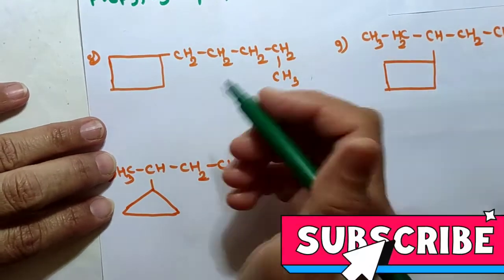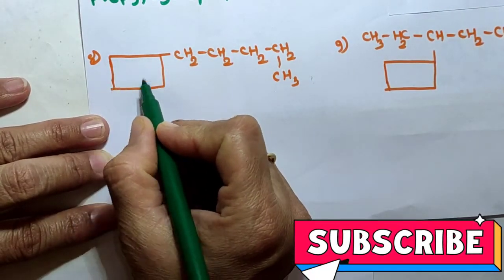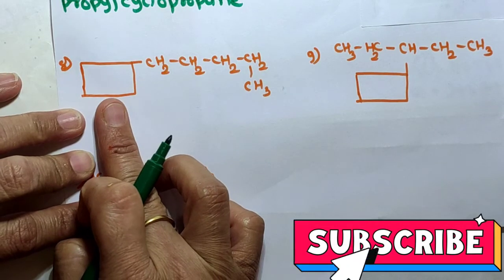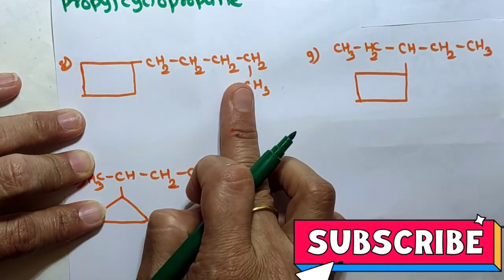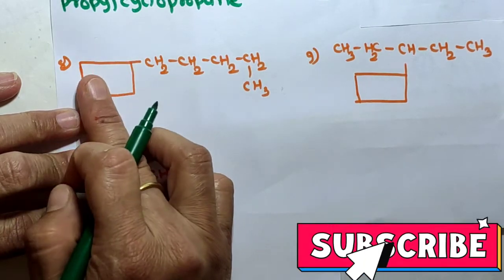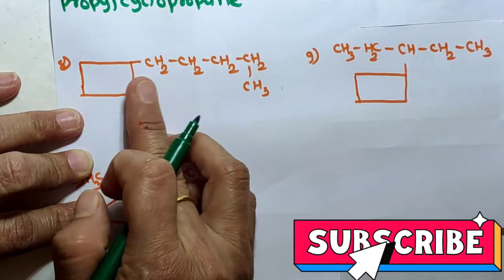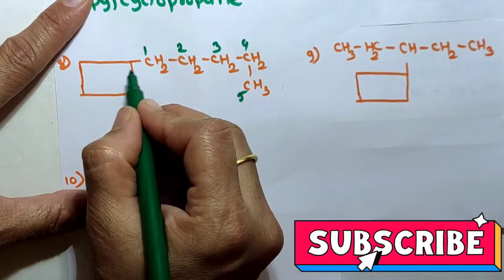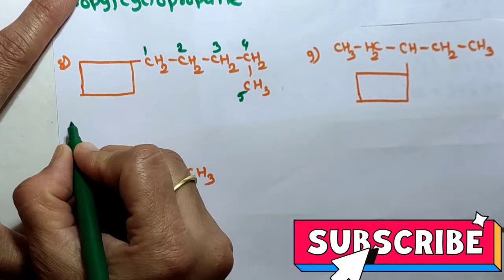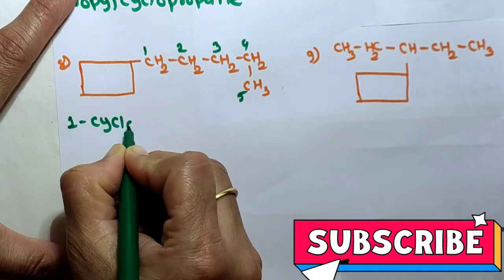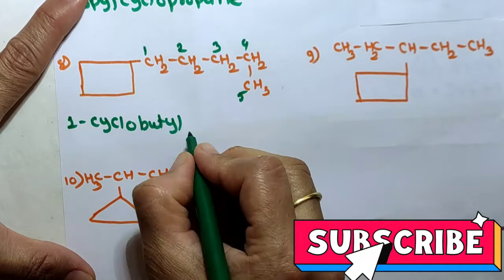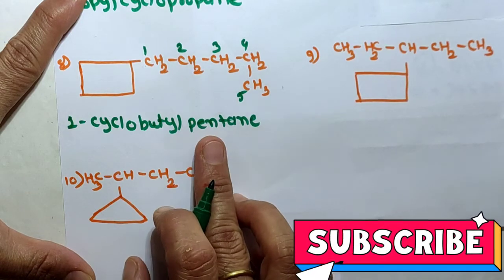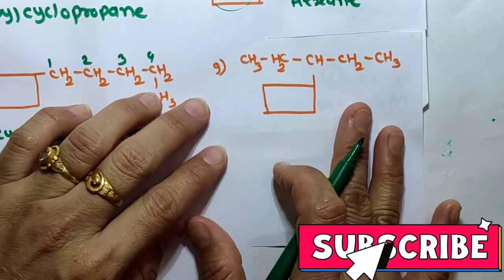Next: a 4-member carbon ring and 5 carbon atoms in the longest continuous chain. The 4-member ring is the substituent and the 5-carbon chain is the longest continuous chain. Numbering from the left-hand side because the ring is attached there: 1, 2, 3, 4, 5. The cyclobutyl group is attached at position 1. With 5 carbon atoms in the chain — pentane — the name is 1-cyclobutylpentane.